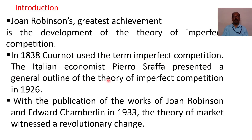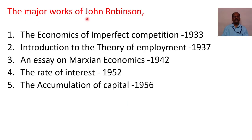The Italian economist Piero Sraffa presented a general outline of the Theory of Imperfect Competition in 1926. With the publication of the work of Joan Robinson and Edward Chamberlin in 1933, the theory of market witnessed a revolutionary change. The major works of Joan Robinson include: Economics of Imperfect Competition (1933), Introduction to the Theory of Employment (1937), An Essay on Marxian Economics (1942), The Rate of Interest (1952), and The Accumulation of Capital (1956).